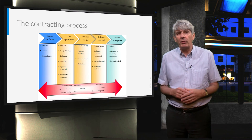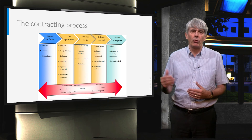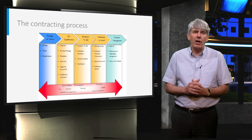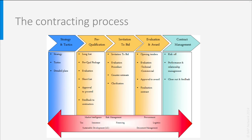As a final step, all the activities leading to a contract have been summarized in an overview graph. The contractual lifecycle goes through five distinct phases: strategy, prequalification, invitation to bid, evaluation and award, and contract management. Underneath these are a number of supporting processes, including market intelligence, risk management, finance, and procurement.